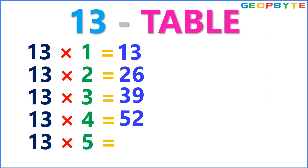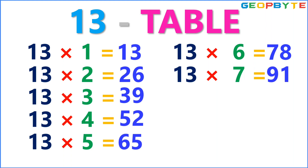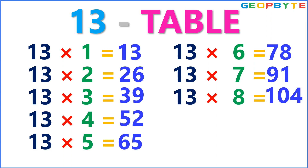13 fives are 65. 13 sixes are 78. 13 sevens are 91. 13 eights are 104.